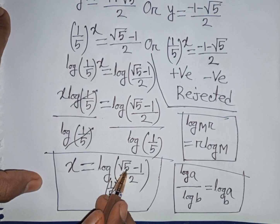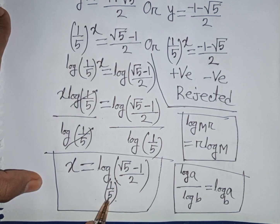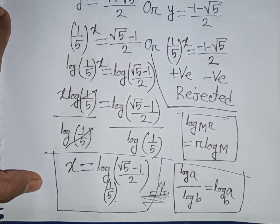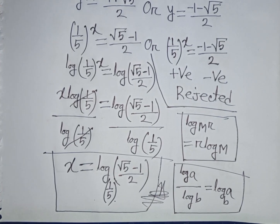Therefore, x is equal to log base (1 over 5) of (square root of 5 minus 1) over 2. This is our final answer. Please like, comment, and subscribe to the channel. Thank you.